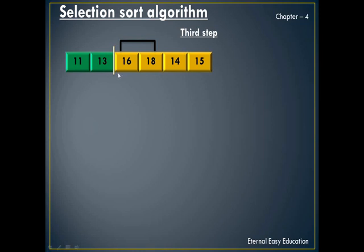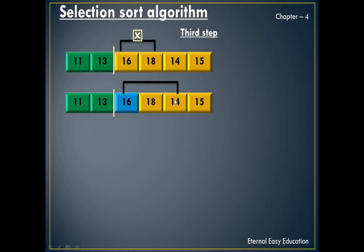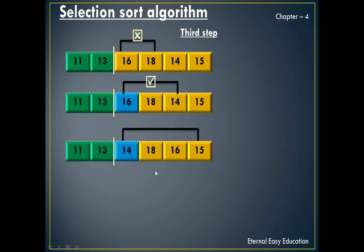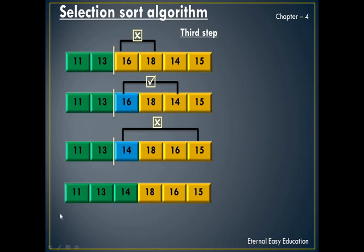Now take 16 at index 2 and compare it with 18 — 16 is less, so no swapping. Again 16 is compared with 14 — 14 is less, so swap. Now this 14 is compared with the next element; as it is smaller, no swapping. The elements 11, 13, 14 up to this index are now sorted. Move to the next step.